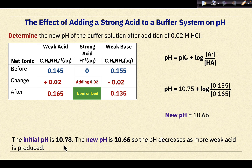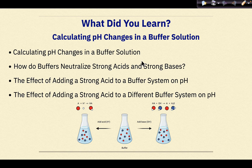The initial pH was 10.78 and the new pH is 10.66, so the pH decreases slightly as more weak acid is produced. In summary, we learned how to calculate pH changes in a buffer solution, how buffers neutralize strong acids and strong bases, the effect of adding a strong acid to a buffer system on pH, and the effect of adding a strong acid to a different buffer system on pH.